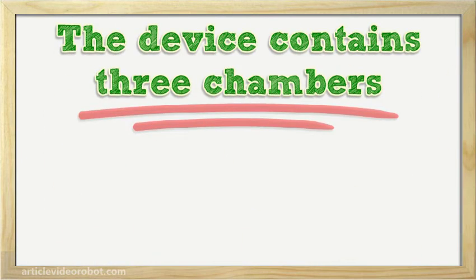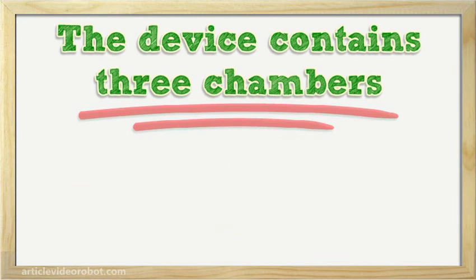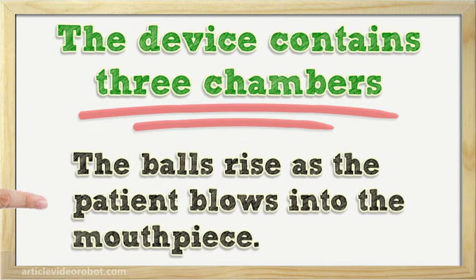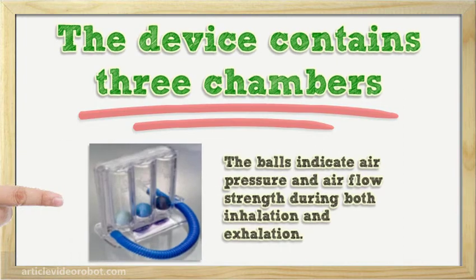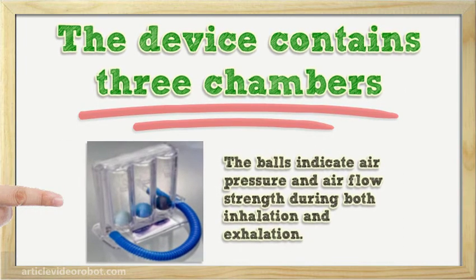The device contains three chambers, each of which contain three balls. The balls rise as the patient blows into the mouthpiece. The balls indicate air pressure and air flow strength during both inhalation and exhalation.